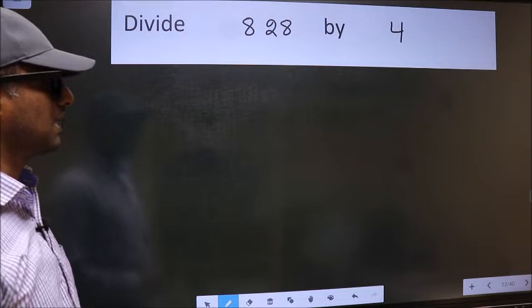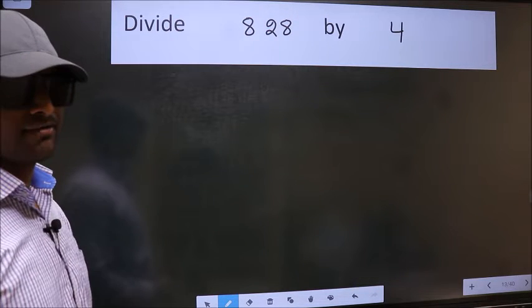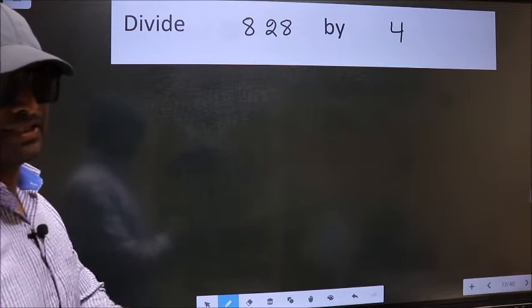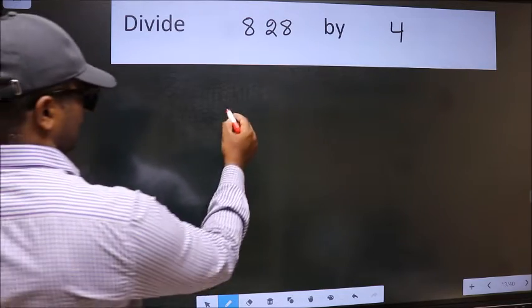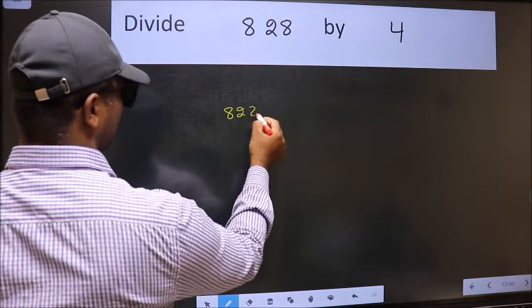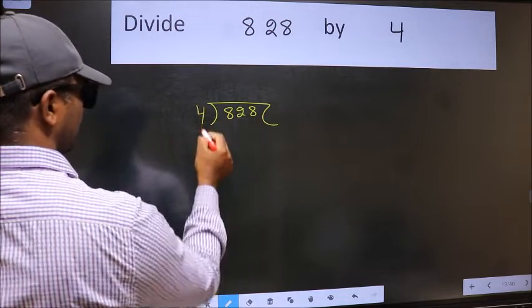Divide 828 by 4. To do this division, we should frame it in this way: 828 here and 4 here.